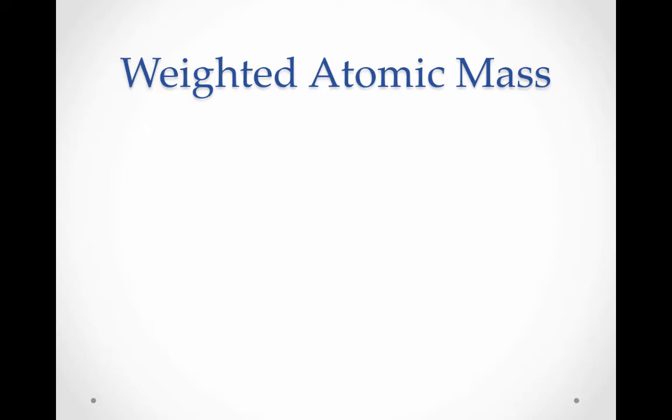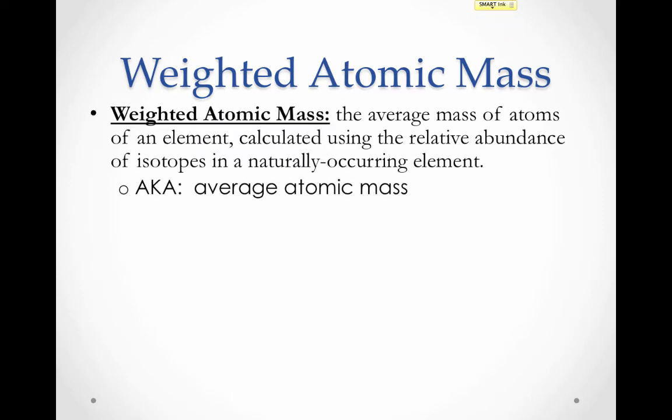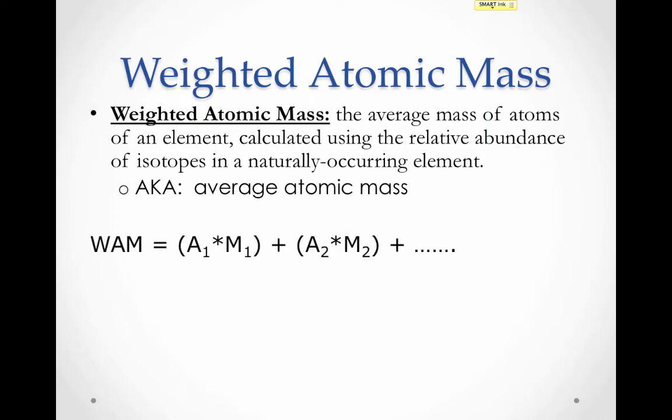So what is the atomic mass? The atomic mass that appears on the periodic table is a weighted average of all of the isotopes of an element. It's the average mass of the atoms of an element calculated using their relative abundance — how much of them there are occurring in nature — and the mass of each isotope. This is often called the average atomic mass, or abbreviated as WAM.